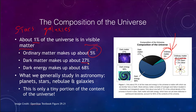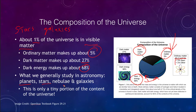Dark matter makes up about 27% of the universe, and dark energy is 68% — the vast majority. So everything we have studied in terms of planets, stars, nebulae, and galaxies is only a very tiny portion: really only about that 1% of the universe that is visible matter.